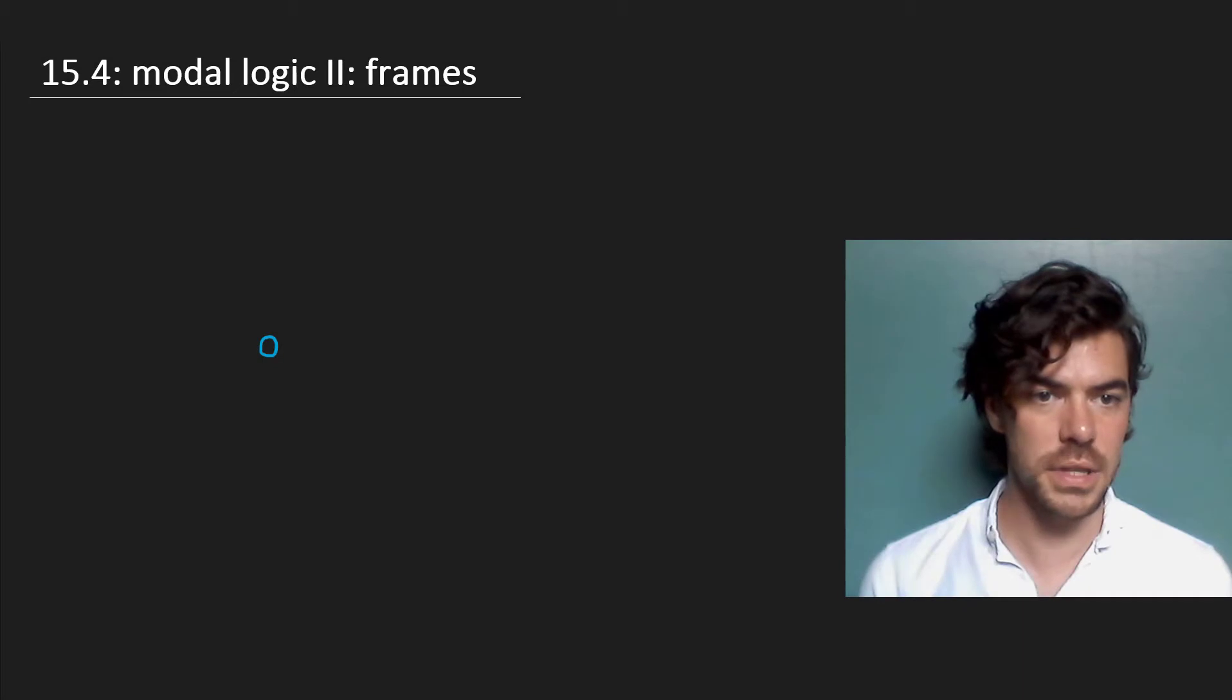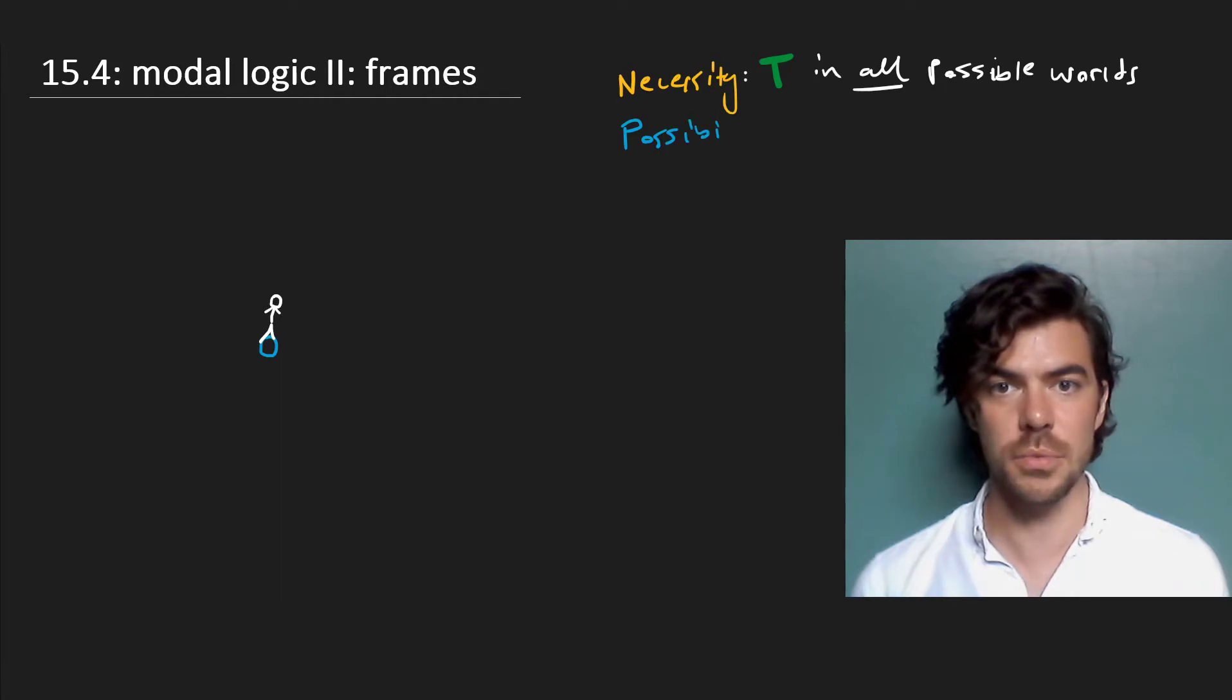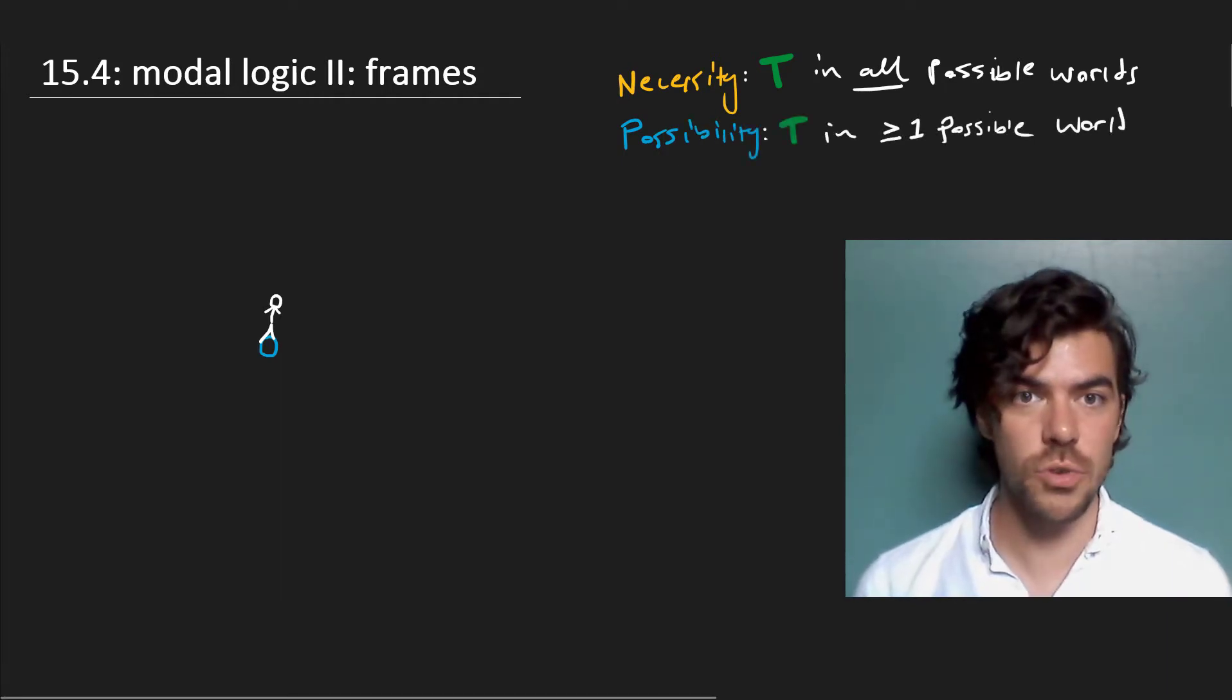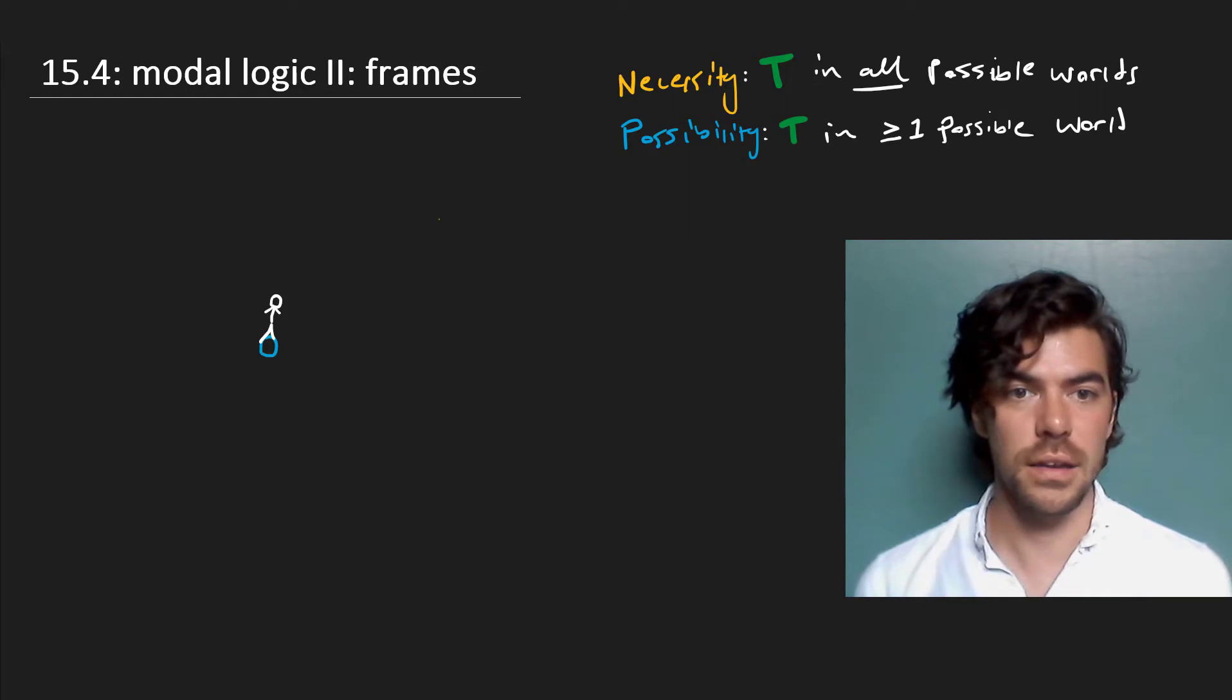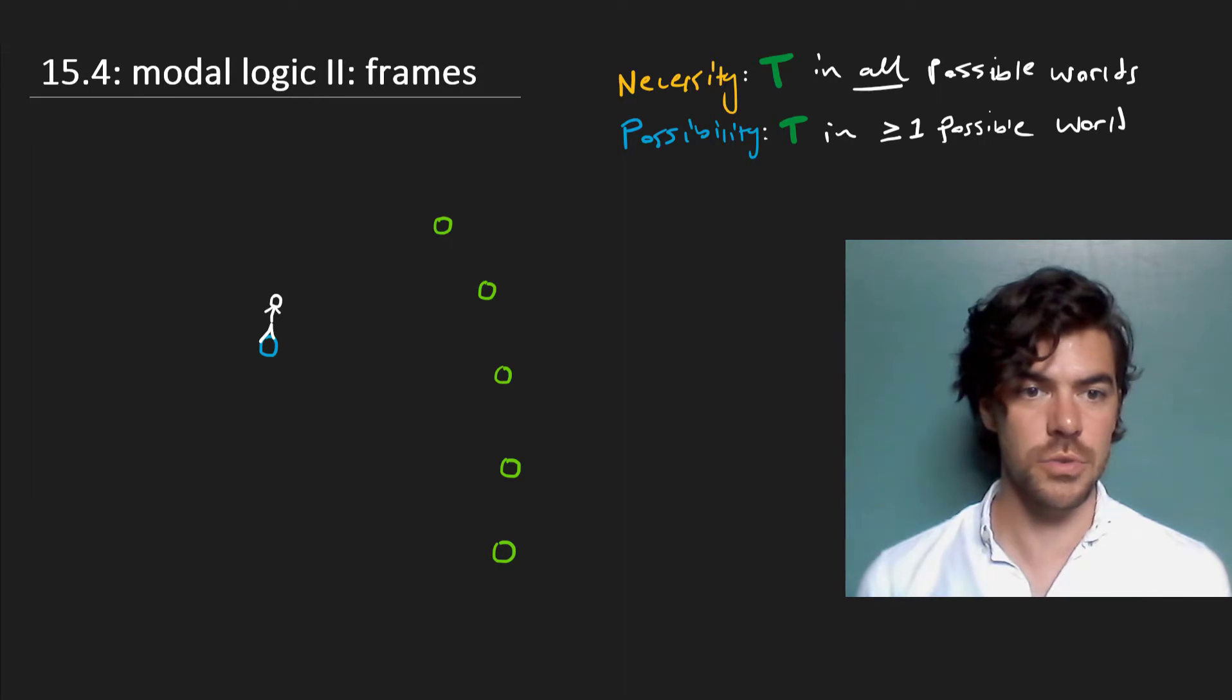Take this little dot here to be the world, and take this crudely drawn stick figure to be you or me. Now we've already seen that we define necessity as truth in all possible worlds and possibility as truth in at least one possible world. But now we can make some more general claims about these possible worlds in terms of their relations. So take these dots to be possible worlds. And let's say you have the accessibility relation. You can conceive of them or however you want to construe this relation, which we'll draw as arrows.